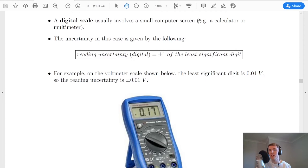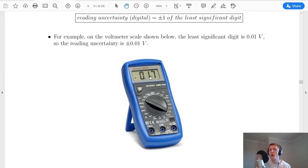A digital scale on the other hand usually involves a small computer screen, for example a calculator or a multimeter. The uncertainty in this case is given by this result in the box which says that the reading uncertainty for a digital scale is equal to plus or minus 1 of the least significant digit.